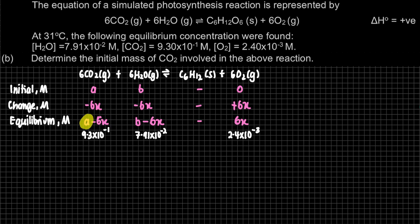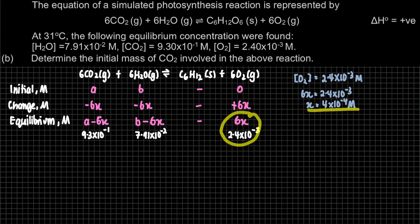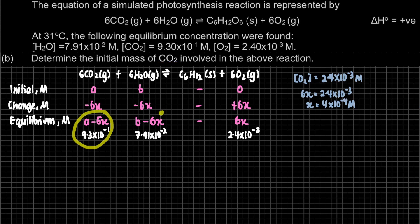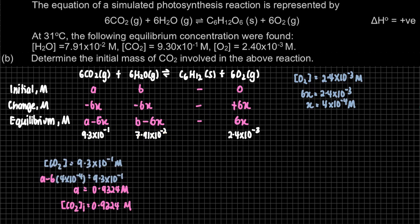From 6X = 2.4×10⁻³, we find X = 4×10⁻⁴. We can now substitute 6X back into the CO₂ equilibrium equation: A − 6X = 9.3×10⁻¹. Solving gives A = 0.9324 molar. This is the initial concentration of CO₂.